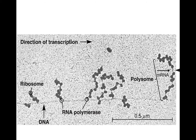Remember that in bacteria there are no separate compartments — there's no nucleus — so the DNA, the RNA, and the protein are all together in the same cellular compartment at the same time. Here we have a polyribosome in a prokaryotic cell. Notice that we have our DNA molecule here with molecules of RNA polymerase synthesizing the RNA, and the larger complexes are the ribosomes making protein with polypeptides already coiling out of them. Since the ribosomes are attached to short messenger RNAs here and longer ones here, this indicates the direction of both transcription and translation.